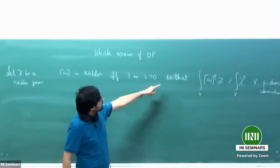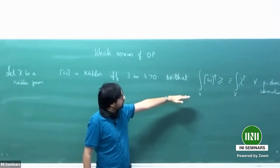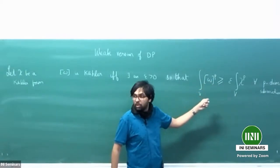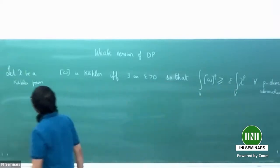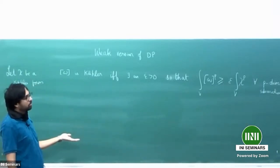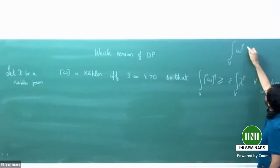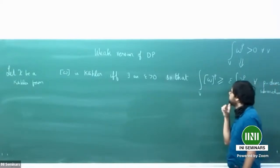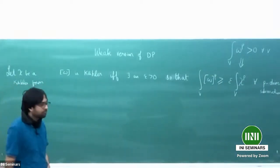Notice that this is a weaker version in the sense that it's assuming more. The original Demailly-Paun result was that the integral of omega raised to p over V is positive for all V. Here you need some sort of uniform positivity. In fact, the Demailly-Paun theorem proves a purely algebraic result, which is interesting even in the projective setting. I don't know if there's a purely algebraic proof of this purely algebraic fact.